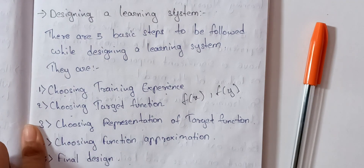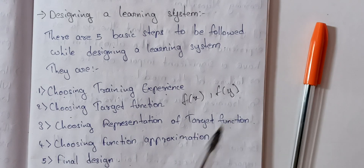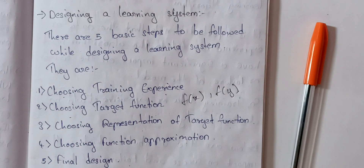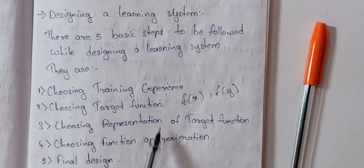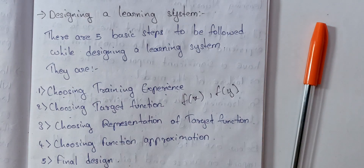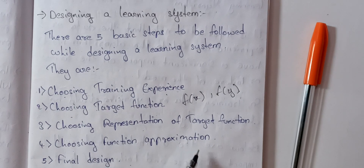Every step is interrelated with each other. The third step is choosing representation of a target function — we will select a linear representation. Please watch the previous video carefully. If you start from this video, you will not fully understand the topic. This topic is very important in the first unit and will be discussed in coming videos.